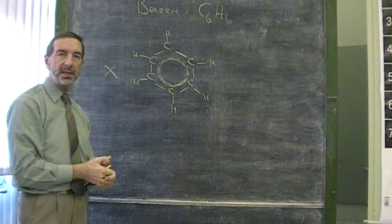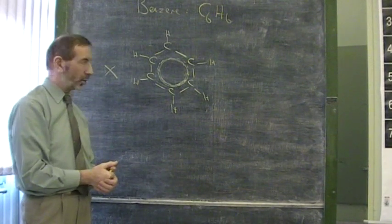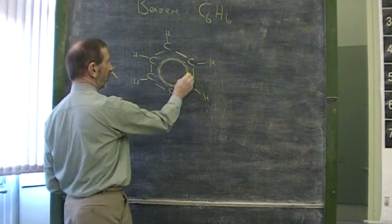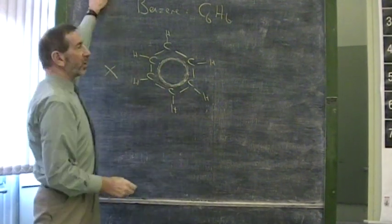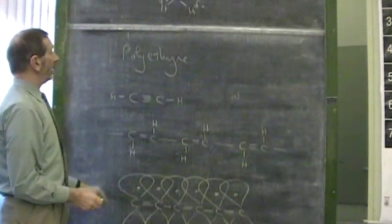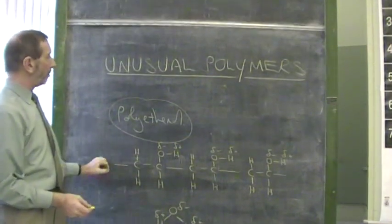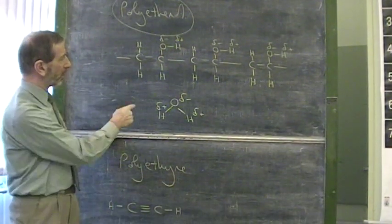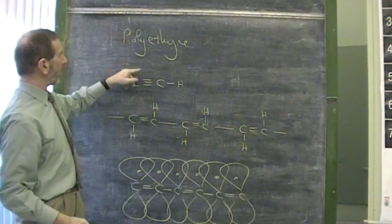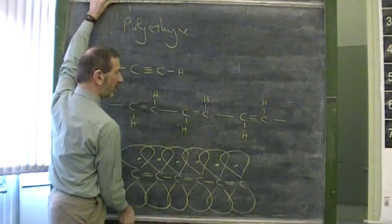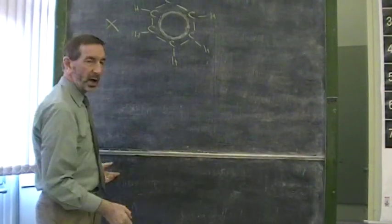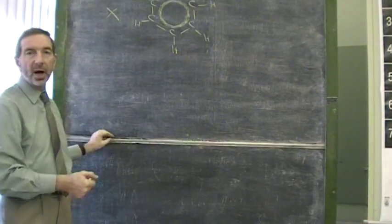Which raises the question, can benzene conduct electricity? No. Because in this case, the delocalized electrons are trapped within the ring. So, what have we said so far? We've spoken about two polymers with unusual properties. Polyethenol, the one which dissolves in water because it's highly polar. And polyethyne, the polymer which conducts electricity because it has delocalized electrons.